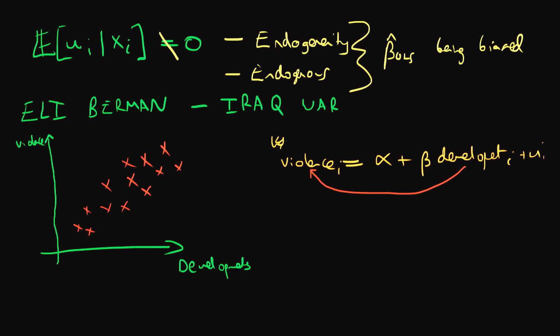But in fact, it's because we've forgotten about another way in which there is a relationship between these two variables, which is regions which have higher levels of violence tend to receive more development spending in the first place. And that effect is likely going to be the one which dominates out of these two.